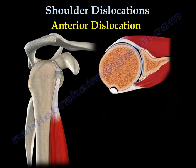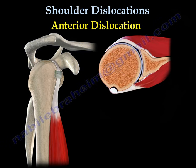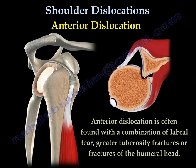This is a normal shoulder joint without dislocation. You can see the biceps tendon anteriorly. This anterior dislocation is often found in combination with a labral tear and greater tuberosity fracture, or fracture of the humeral head called a Hill-Sachs lesion.